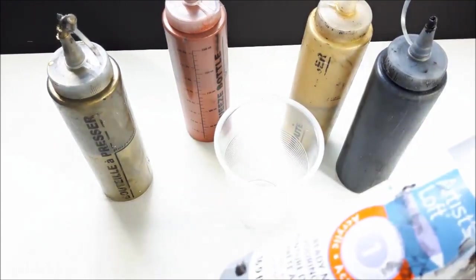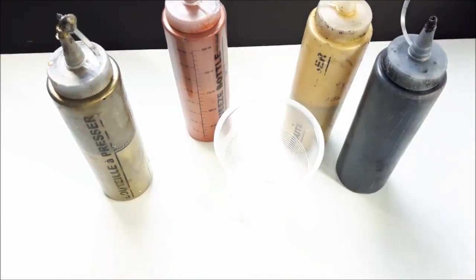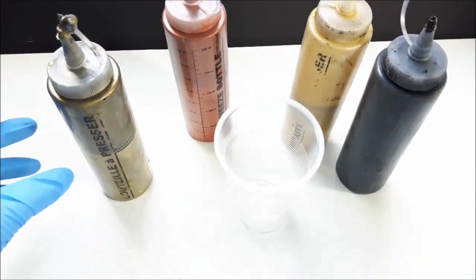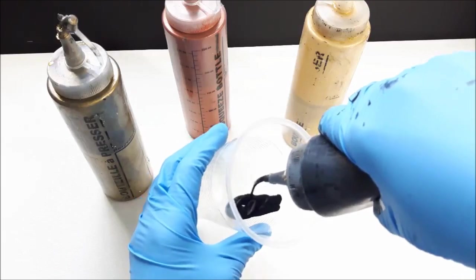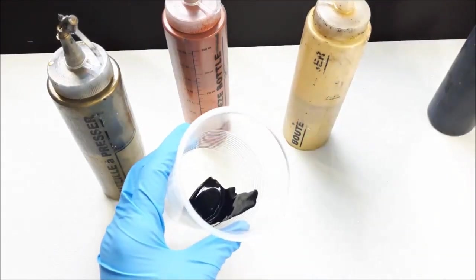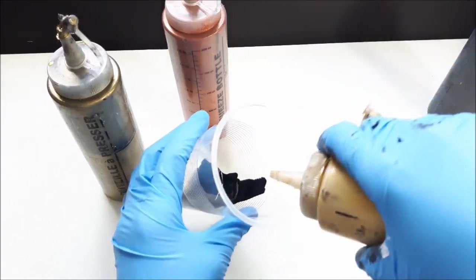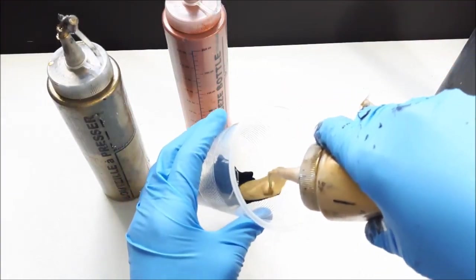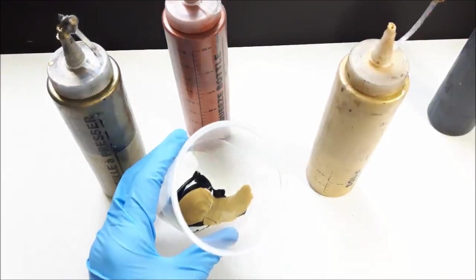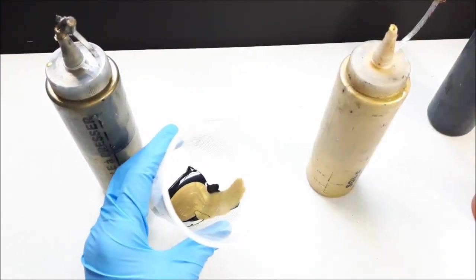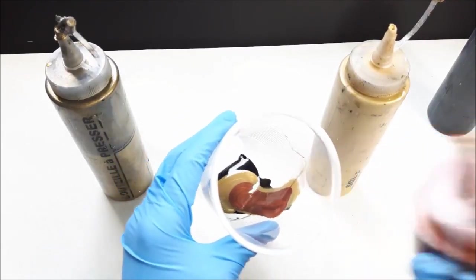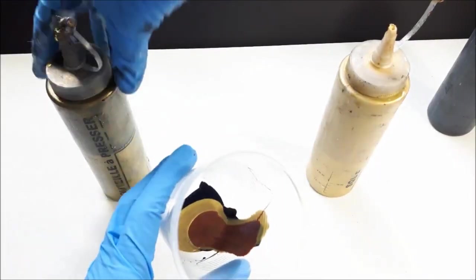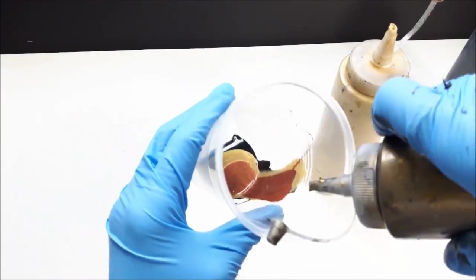The first color I'm starting with is black. I find it easier to pour from the squeeze bottle. These are my go-to colors. We're going to do some gold, a little bit of this gorgeous copper—I just love that color—and some bronze.